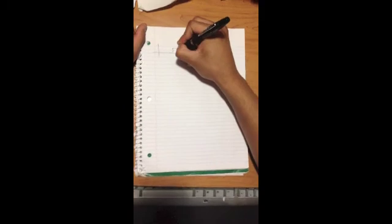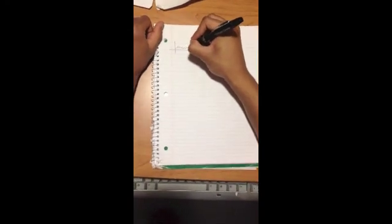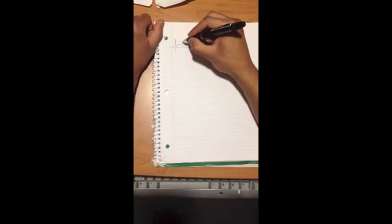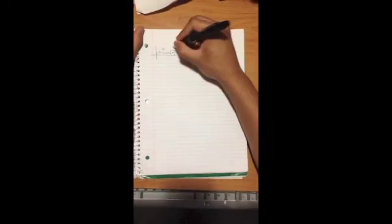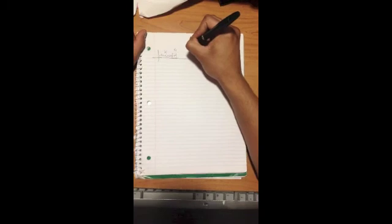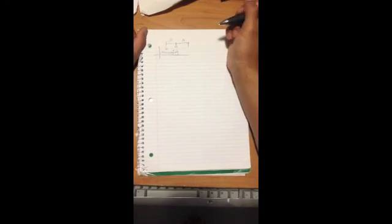Here is your setup. This is assuming a frictionless surface. Here's your spring with the spring constant k, mass m for the block. This is your equilibrium position. And let's give it an amplitude of a, negative a.